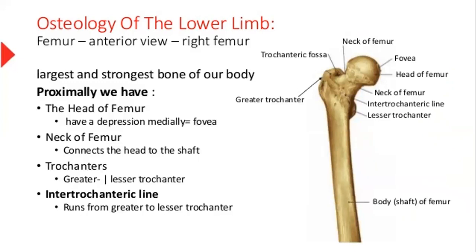Let's move forward to the femur. This is the anterior and proximal view of the femur. We have the head of femur, and in the head of femur there is a depression called fovea. Then we have the neck of femur, then the body or shaft of femur. Near the neck, we have two trochanters: this is the greater trochanter and this is the lesser trochanter. This is the trochanteric fossa, and there is a trochanteric line running from the greater trochanter to the lesser trochanter.